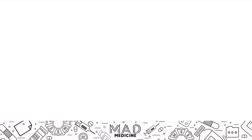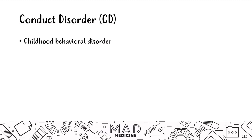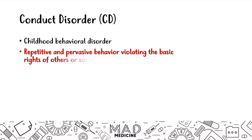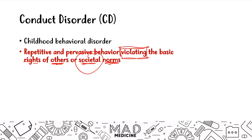Conduct disorder is a childhood behavioral disorder in which a patient is going to present with repetitive and pervasive behavior that violates — and this is the key word — violates the basic rights of others and societal norms. For example, this could be a very aggressive kid who bullies other kids. This could be a kid who likes to hurt animals, which is not normal because it's violating societal norms.